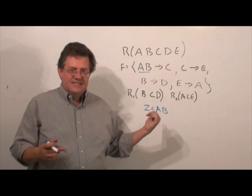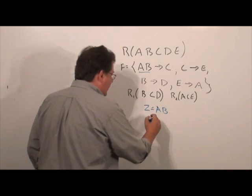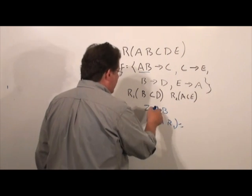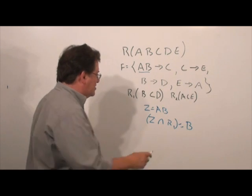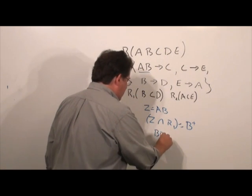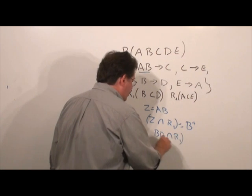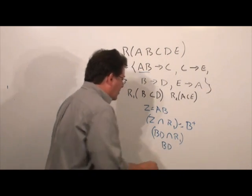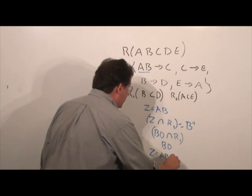Well, here's what we're going to do. We take the Z, which in this case is AB, and we intersect it with the first subschema. So, we have Z intersect R1, and what is that equal to? Well, AB and BCD is B. So, we've done the intersection came up with B. The next thing we do is figure what is B closure, and B closure would be BD. Now, with this closure, we intersect once again with R1, and BD intersect R1 is BD. We union that back with the Z. So, Z now equals A, B, D.